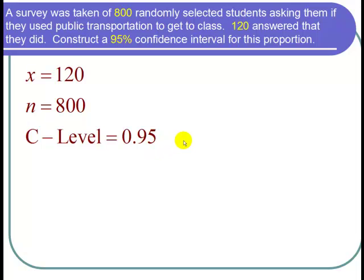Let's make sure that our sample size is large enough to be able to use a normal distribution for this confidence interval calculation. So to do that we need to calculate np̂ and nq̂ to make sure they're both bigger than 5.